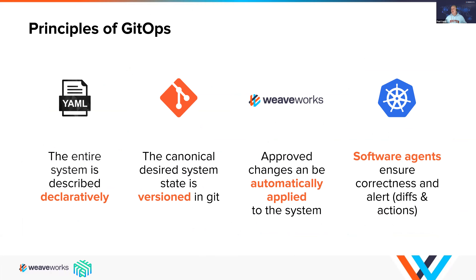Before we begin, we need to talk a bit about GitOps in general. These are the four basic principles of GitOps. Kubernetes is a declarative system, meaning you can declare any Kubernetes resource that runs in your cluster — from RBAC through networking, storage, compute, namespaces, security, and authorization.